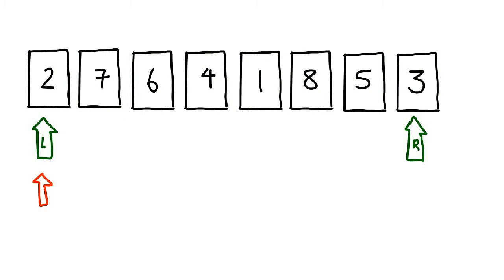So the idea is this: the items at the left and right positions are compared. If they are out of place — and in this case, because we're sorting in ascending order, we want the item at the left to be smaller than the item at the right — if that is not the case, we're going to swap. In this case, three is larger than two, everything is fine, so we can move on.